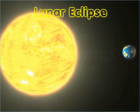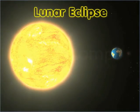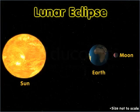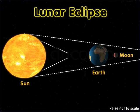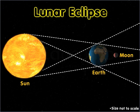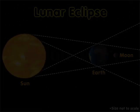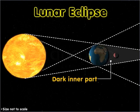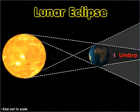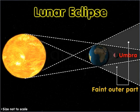A lunar eclipse occurs when the Earth comes in between the Sun and the Moon. In a lunar eclipse, the Earth blocks some of the sunlight that would normally reach the Moon, and the Earth's shadow falls on the Moon's surface. The shadow has two parts: the dark inner part of the shadow is called Umbra, and the faint outer shadow around Umbra is called Penumbra.